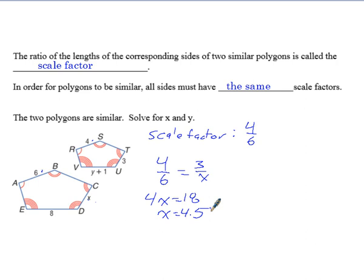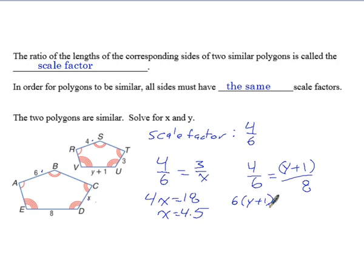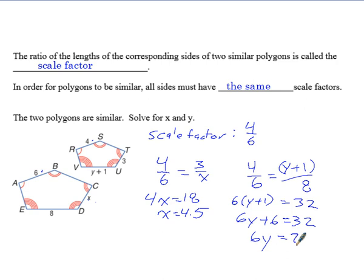To solve for Y, we use that same scale factor — the scale factor can be used for the whole figure. So 6 is to 4 as Y plus 1 is to 8. Cross multiplying: 6 times (Y plus 1) equals 4 times 8, which is 32. Distributing the 6 gives 6Y plus 6 equals 32. Subtract 6 from both sides: 6Y equals 26. Divide both sides by 6, giving Y equals 4.33 repeating.